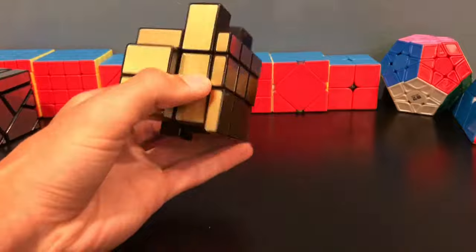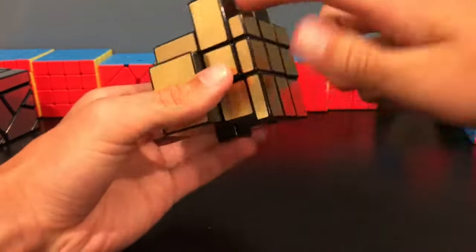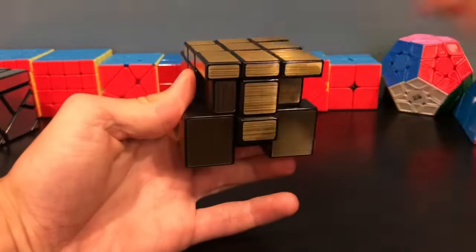You'll know that you've built a whole side when you have smooth lines all the way around and it's also all smooth on the top.